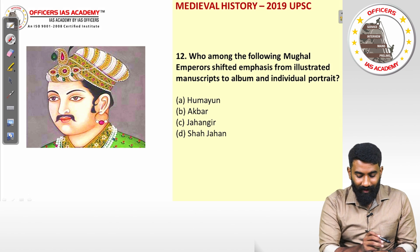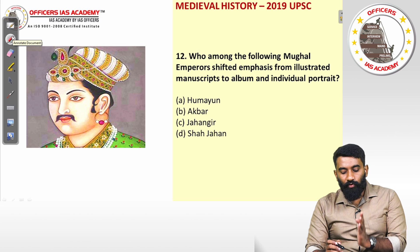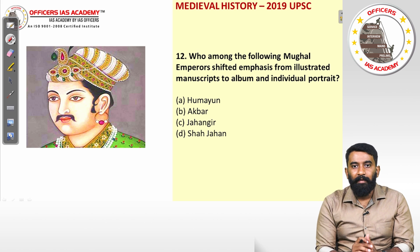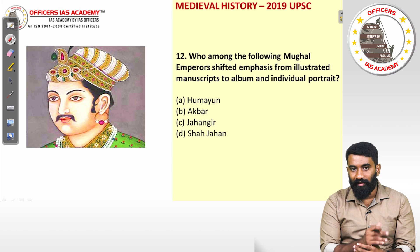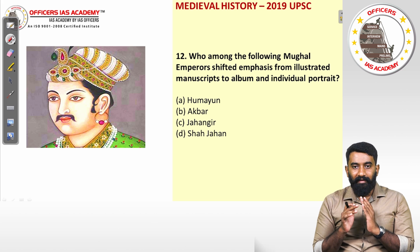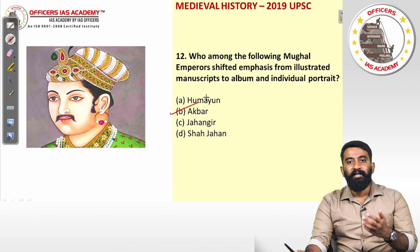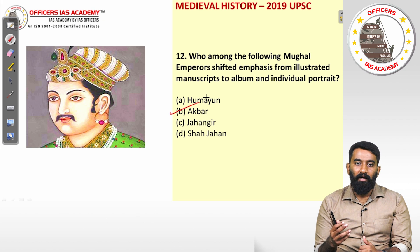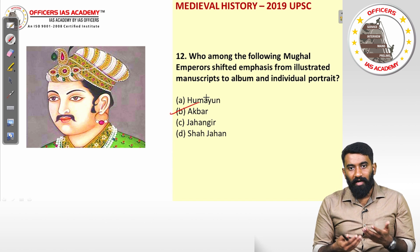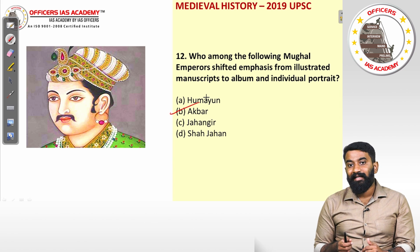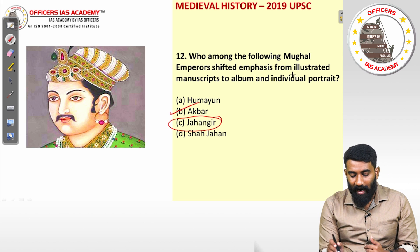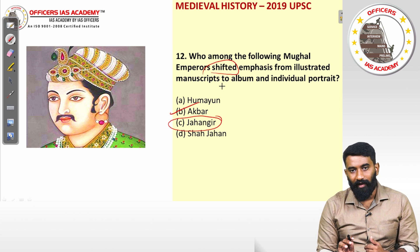Question twelve: which Mughal emperor shifted emphasis from illustrated manuscripts to albums and individual portraits? In the beginning, paintings appeared within manuscripts as illustrations. Later, stand-alone paintings became prominent. While miniature paintings evolved significantly under subsequent rulers — especially Jahangir — the shift from illustrated manuscripts to individual paintings happened under Akbar. The answer is option B, Akbar.